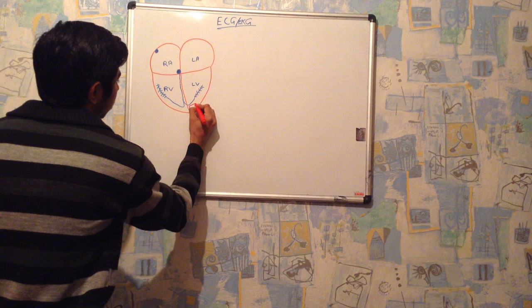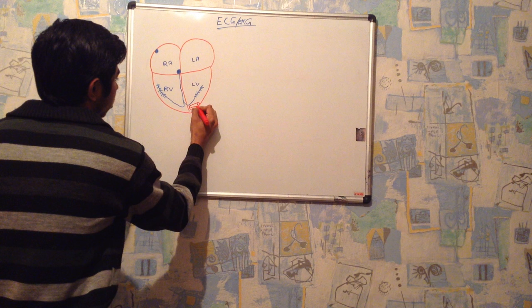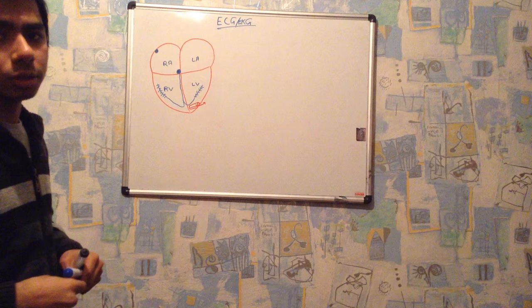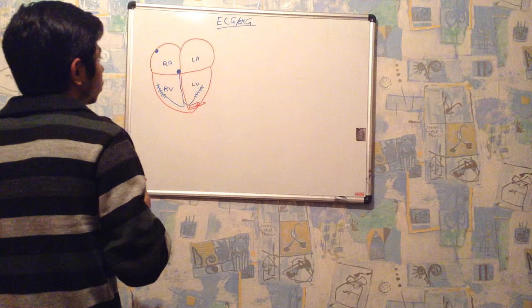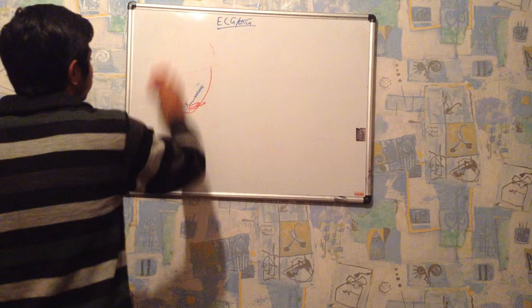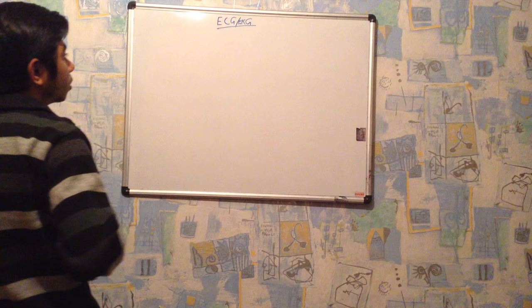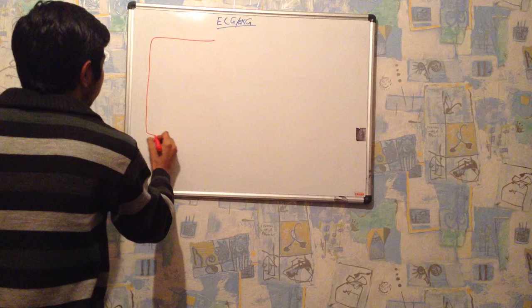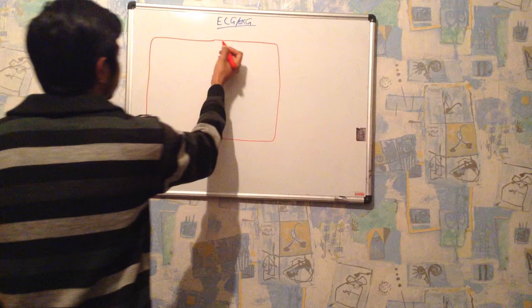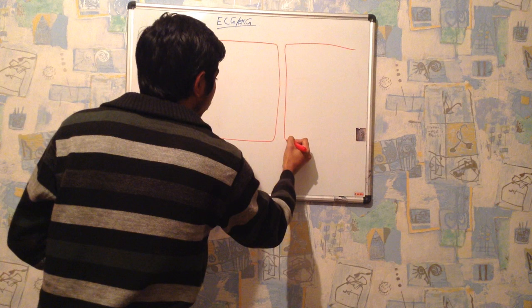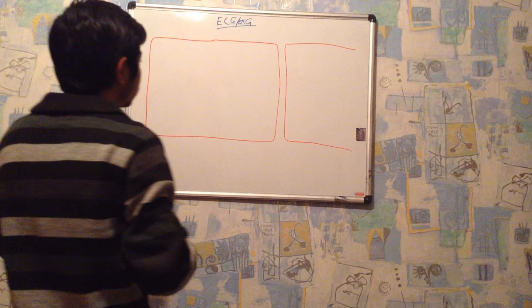I am taking one cardiomyocyte from this heart and I will magnify it. I will try to show you how action potential is moving inside the cardiomyocyte. I am drawing here one cardiomyocyte — I will take even two cardiomyocytes so that I can clearly show you how action potential is moving from one cardiomyocyte to another.